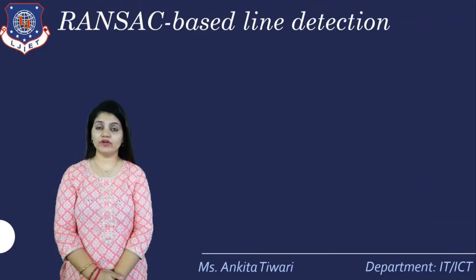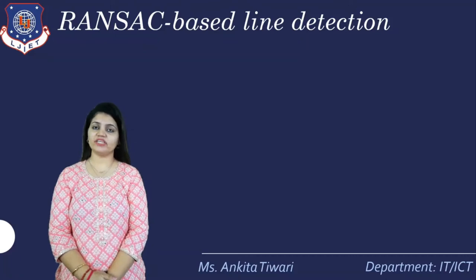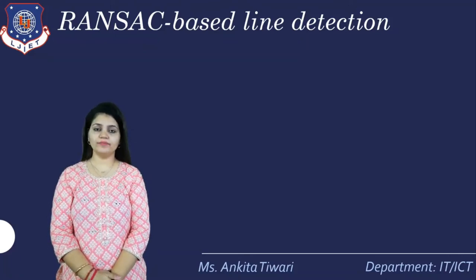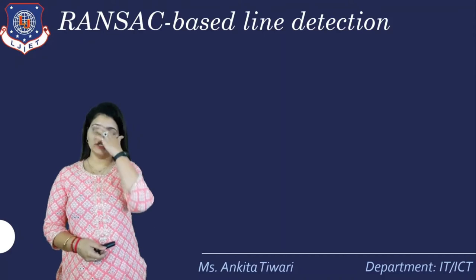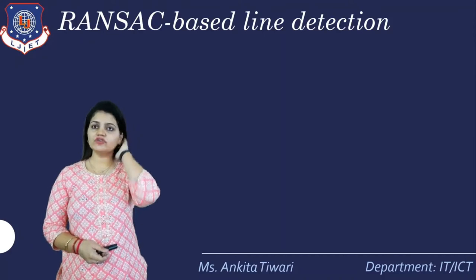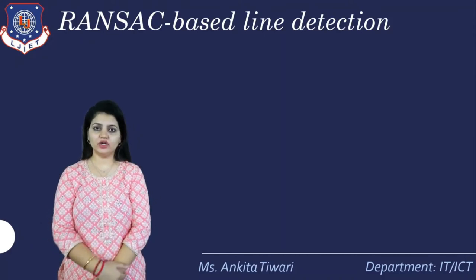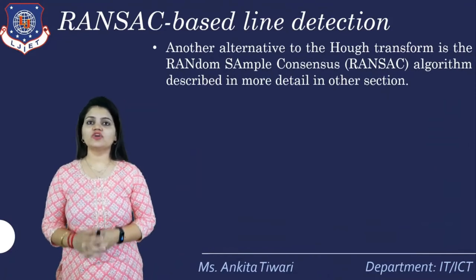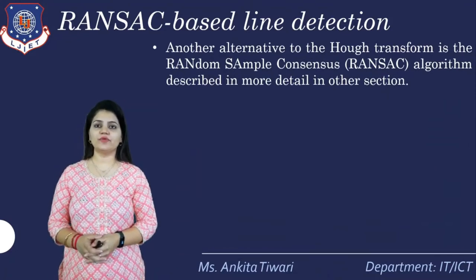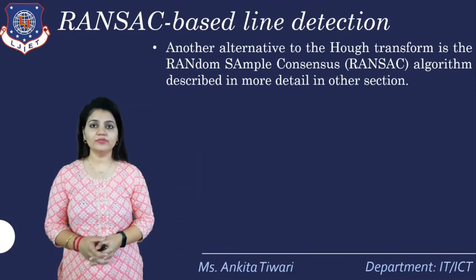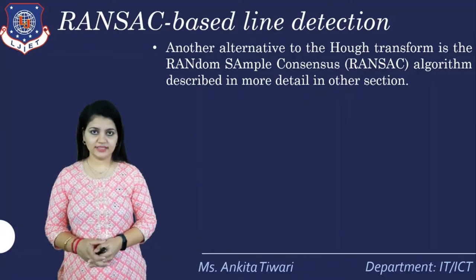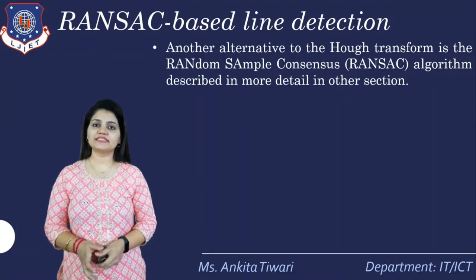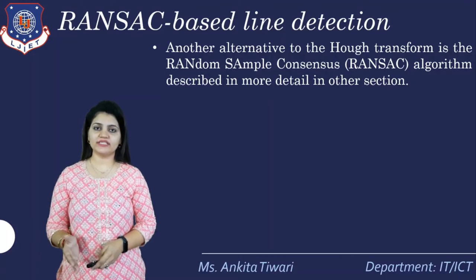We have already seen the Hough transform and its various properties — how it works, the algorithm, the form. With respect to that, we also have the RANSAC-based line detection algorithm. Another alternative to the Hough transform is the Random Sample Consensus, that is the RANSAC algorithm, which is described in more detail in other sections as well.